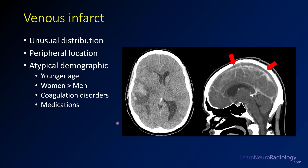Venous infarct is another cause of hemorrhage that can throw you off. It's often in an unusual distribution — if you see a peripherally located hemorrhage, particularly at a cortical or subcortical junction, think about venous infarct. These patients tend to be younger women and may have coagulation disorders or be on medications that increase clotting risk, such as hormonal contraception. In this example you see a peripheral hemorrhage, and on a CT venogram there's extensive thrombus in the superior sagittal sinus — the hemorrhage resulting from overpressure in the associated veins.